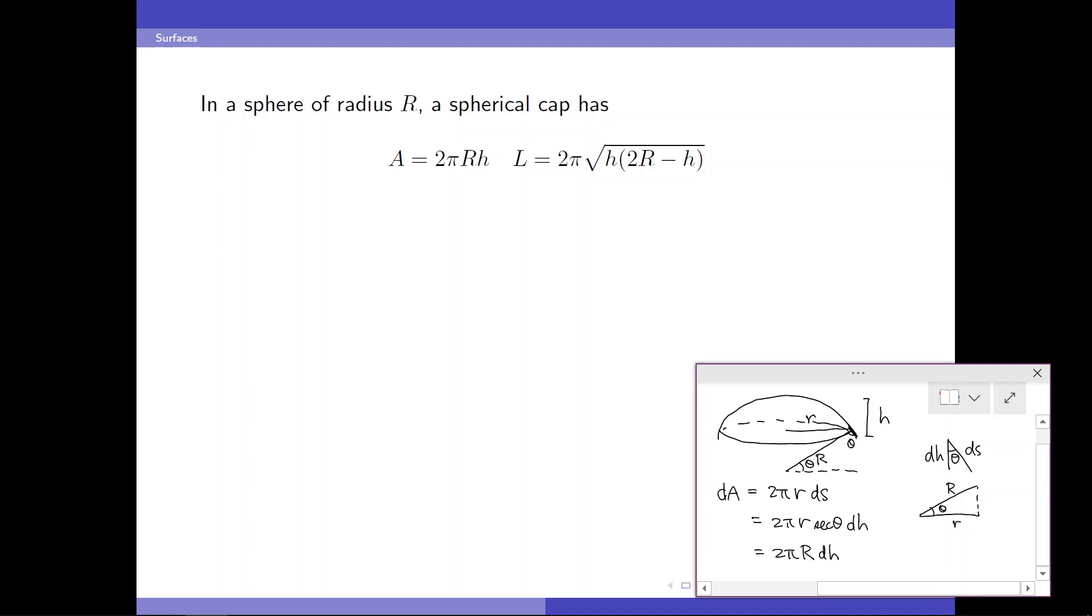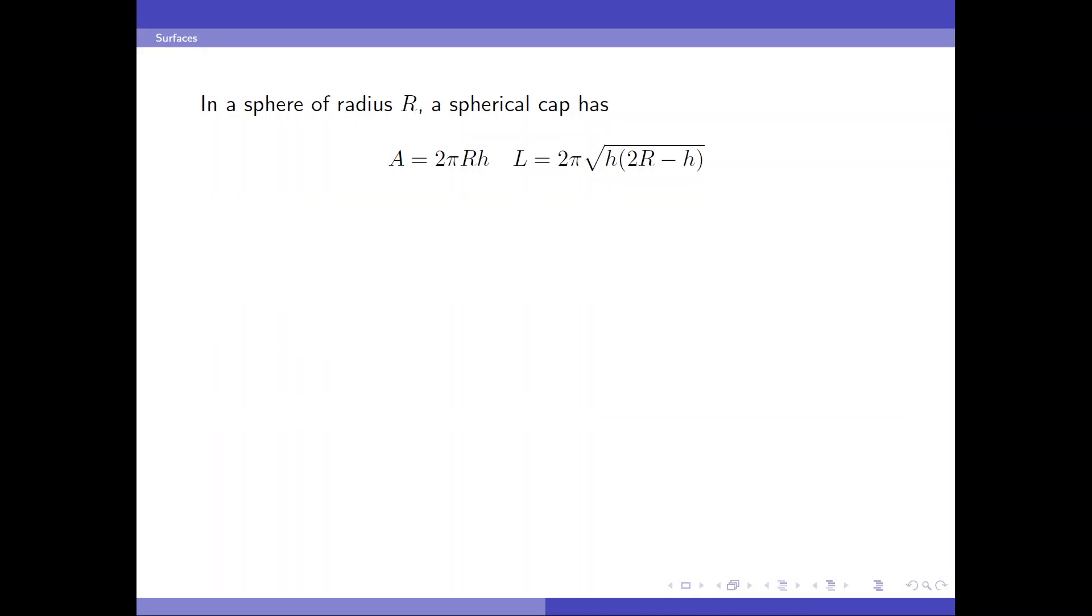Therefore, r times secant theta is nothing but the radius of the sphere. And integrating this identity, we get the area formula. And the boundary length is computed easily. Some manipulation yields that L squared equals 4 pi a, but with a deficit a squared over r squared. So the curvature of the sphere penalizes this isoperimetric inequality.